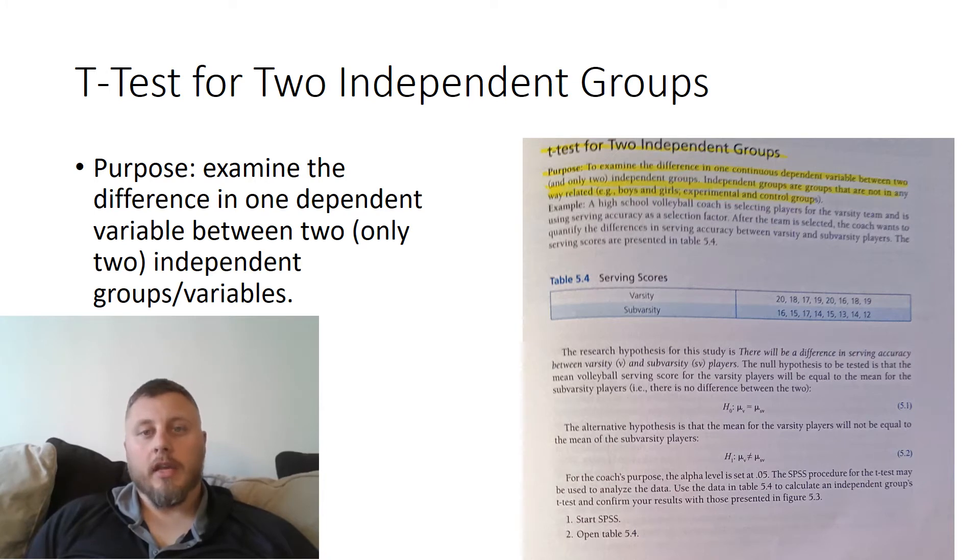Now we're talking about the two independent groups, the t-test for two independent groups and only two. So when we exceed more than two independent groups, then we are looking at something like an ANOVA. And that's not part of this video.